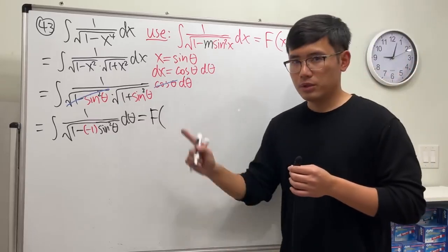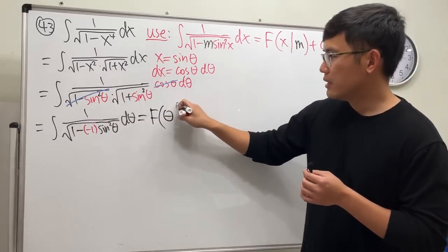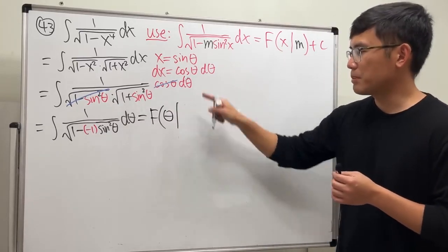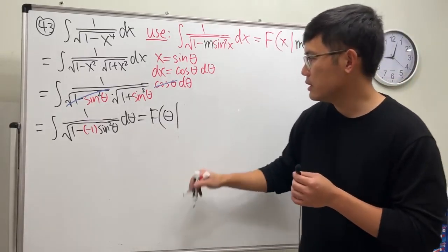First, you put the input. We are still in the theta world, therefore put theta. And then vertical bar, and then you give the parameter value m—right here is negative 1.